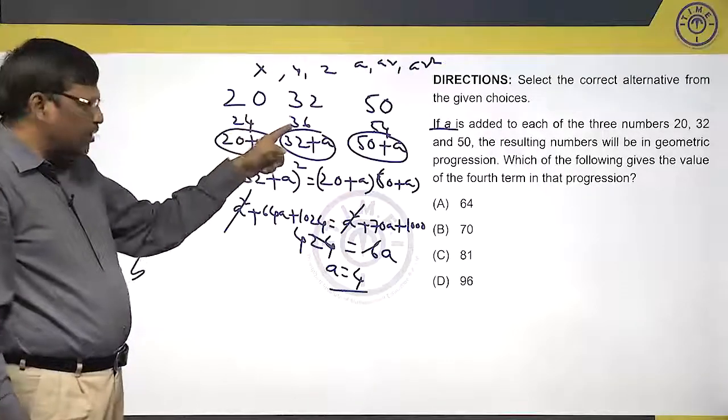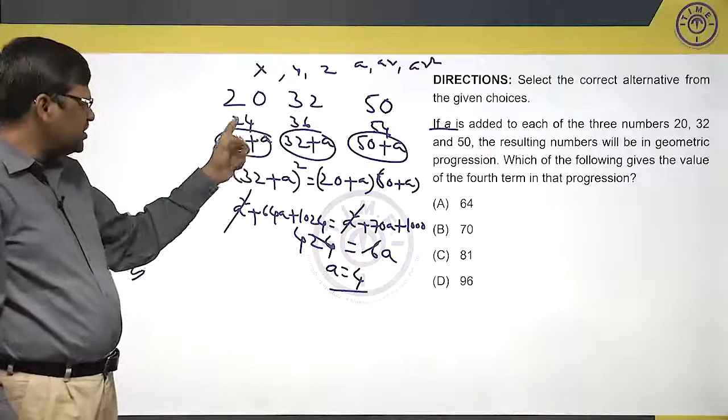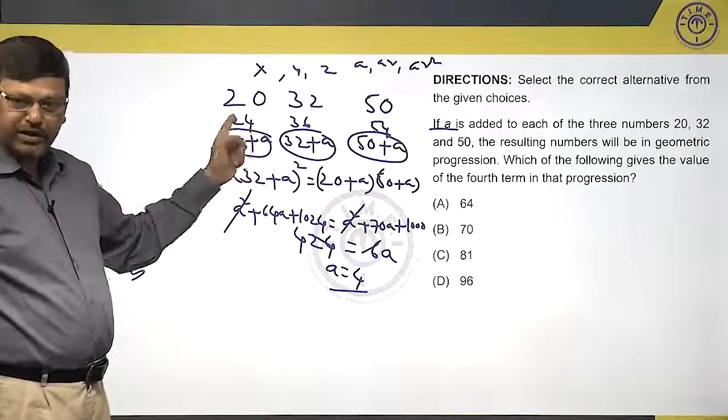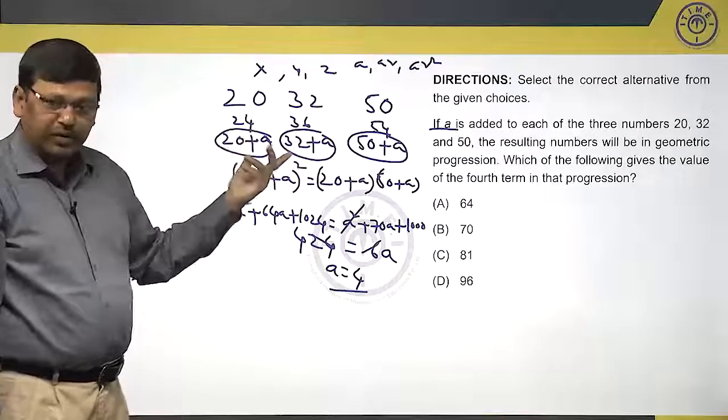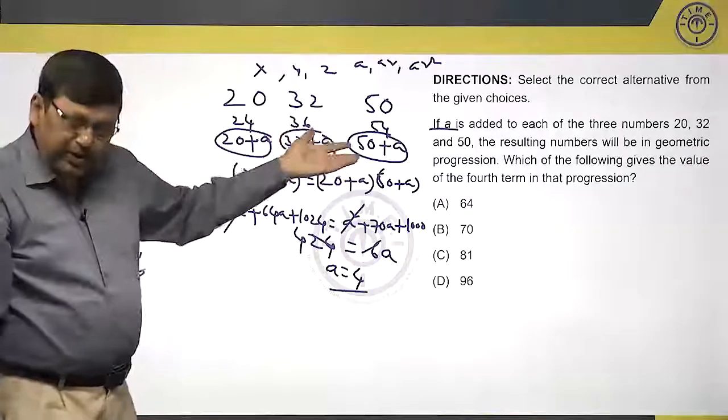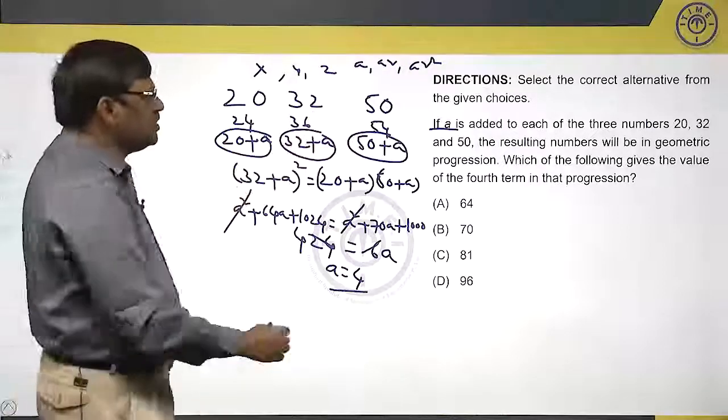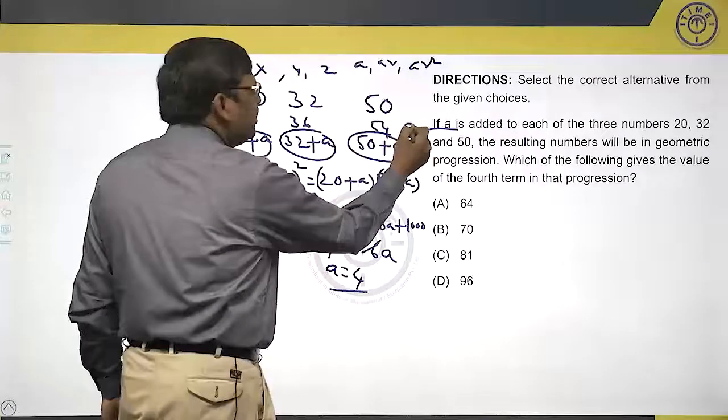If you see here, 24 into 1.5 is 36 or you can see 36 by 24, 3 by 2. 54 by 36, 3 by 2. 3 by 2 means 1.5 times. So, 54 into 1.5 will be 81.